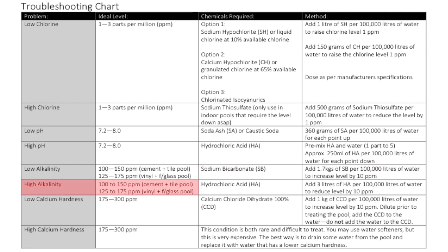For high alkalinity — again, the ideal range is 100 to 150 parts per million — we're going to use hydrochloric acid. Add 3 litres of hydrochloric acid per 100,000 litres of water to bring the level down by 10 parts per million.